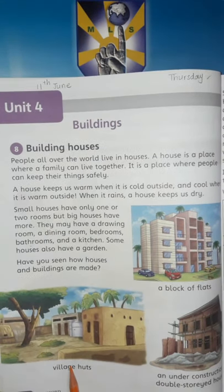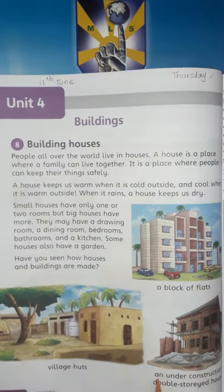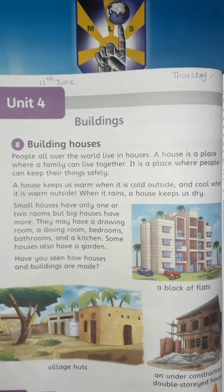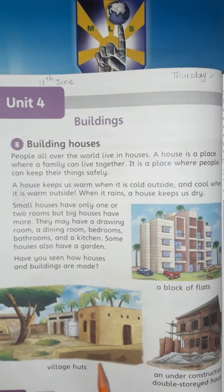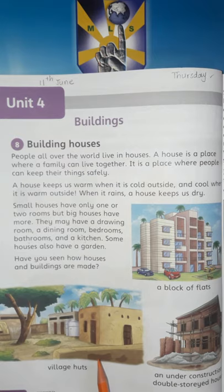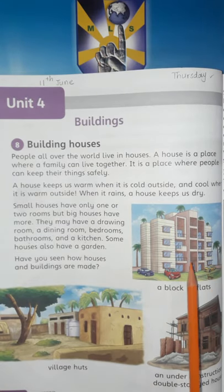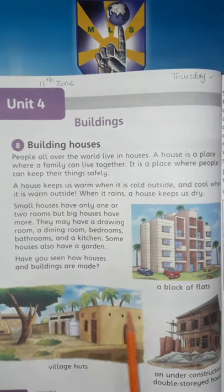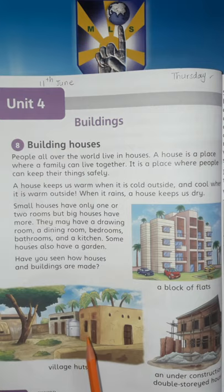For example, a village hut, a block of flats. Here is an under-construction double-storied house — it has two floors. Houses can be made of concrete; for example, this block of flats is made of cement and concrete, while these village huts are made of mud.